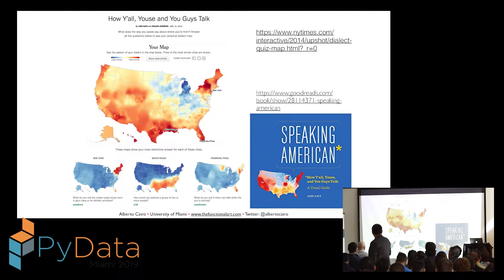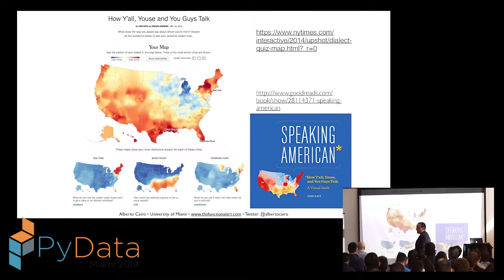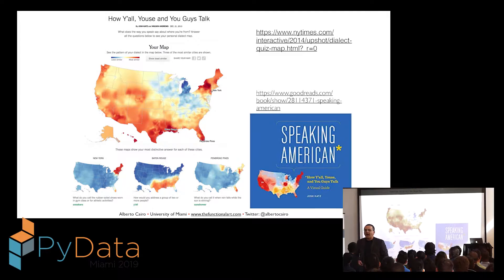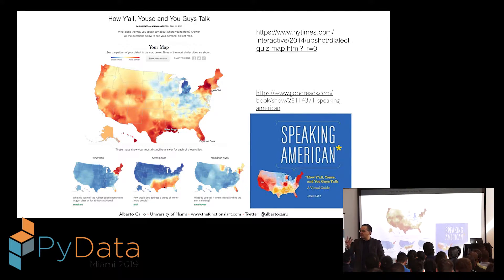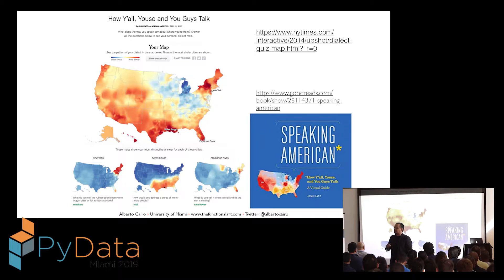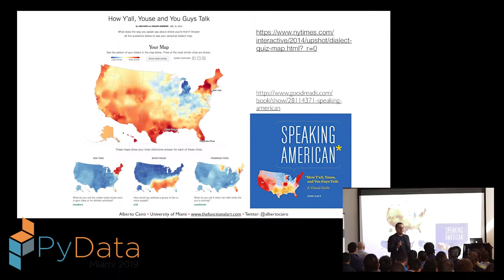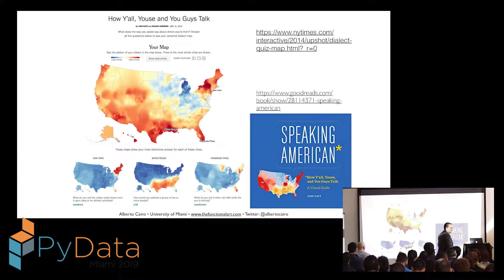The most popular piece of content ever published by the New York Times online is a data visualization commonly called the dialect map. The piece is titled 'How You'll Use and You Guys Talk.' It asks you several questions about how you pronounce certain things in English, and based on your responses, the map shows more or less where you probably live. For native English speakers from the United States, the tool will basically pinpoint exactly where you live based on your dialect.